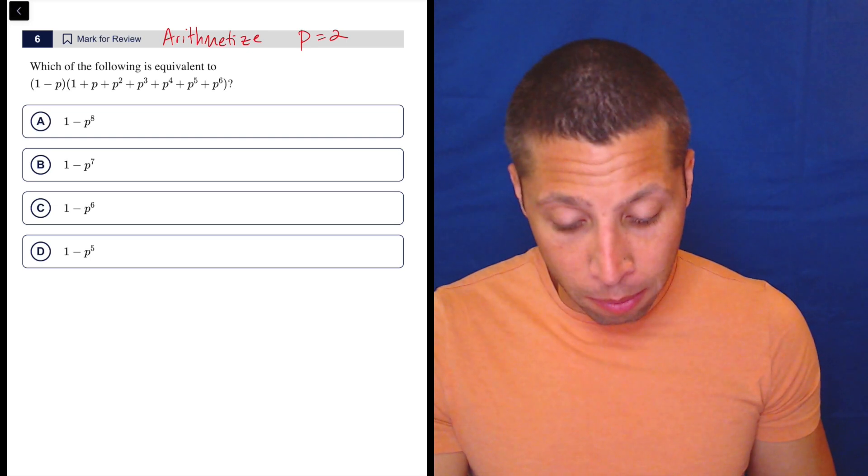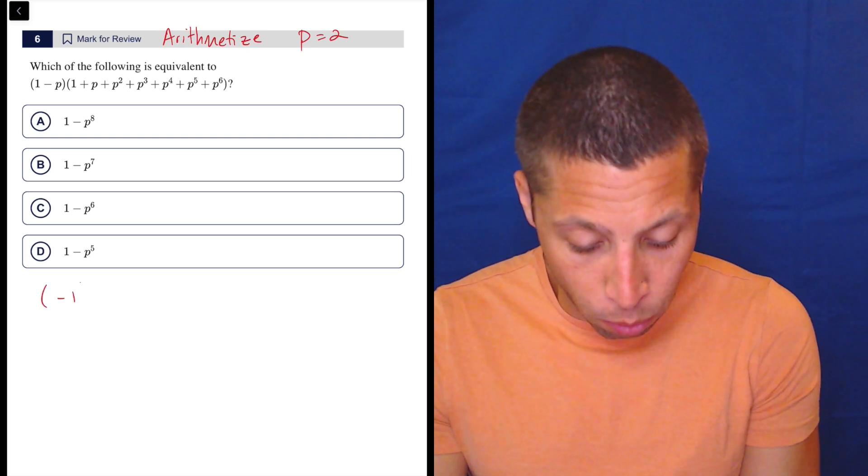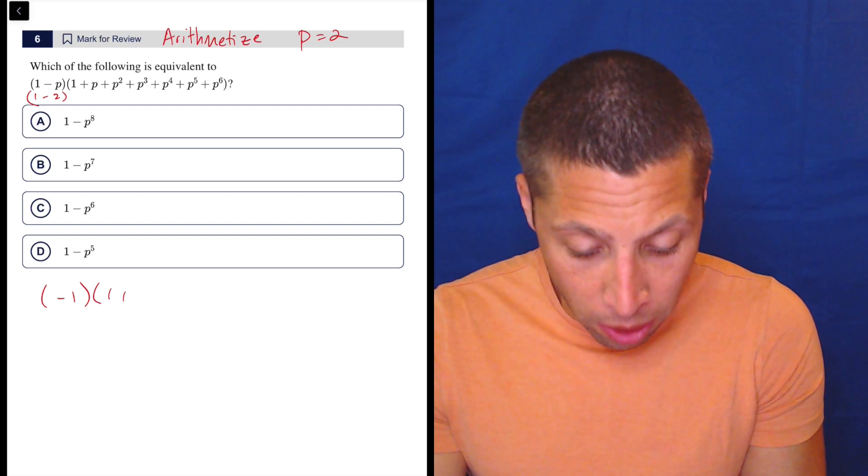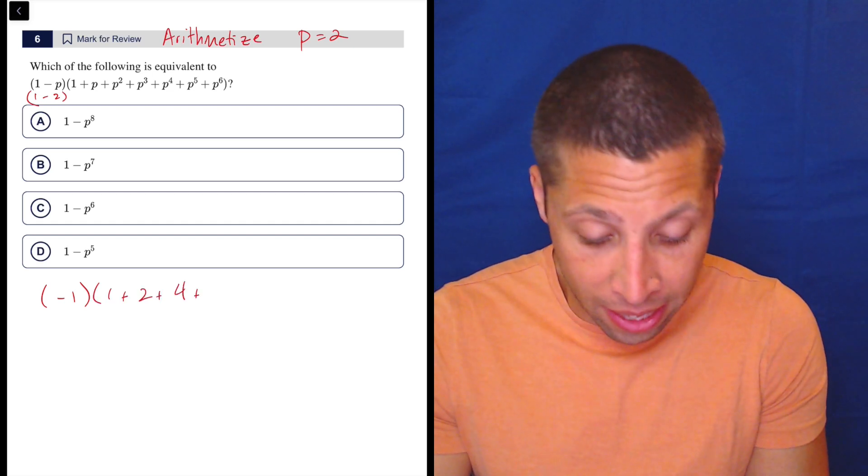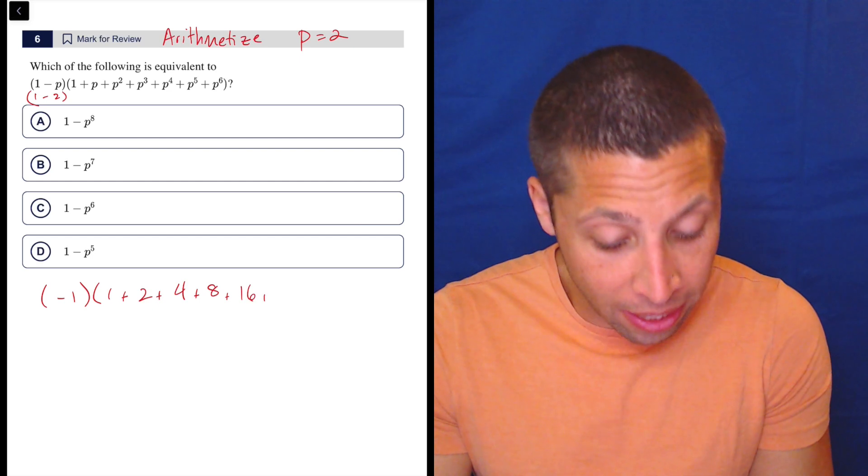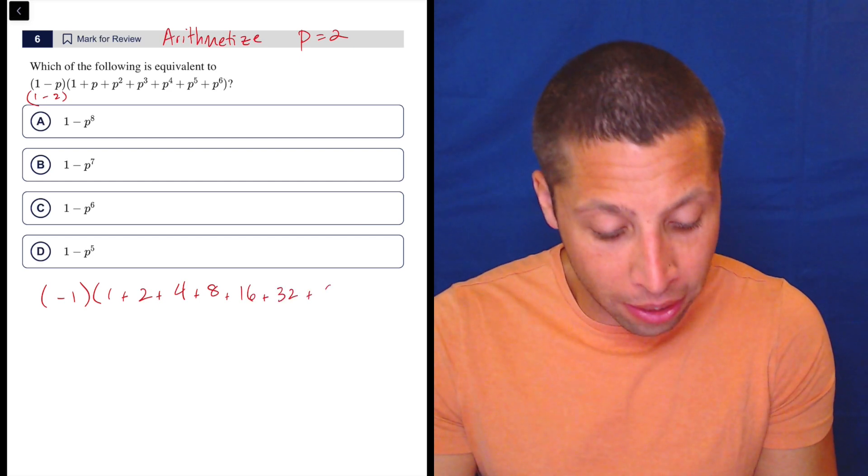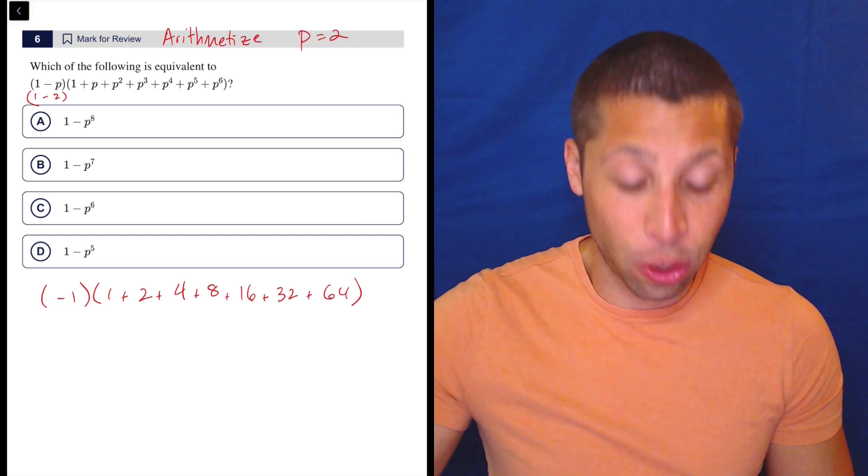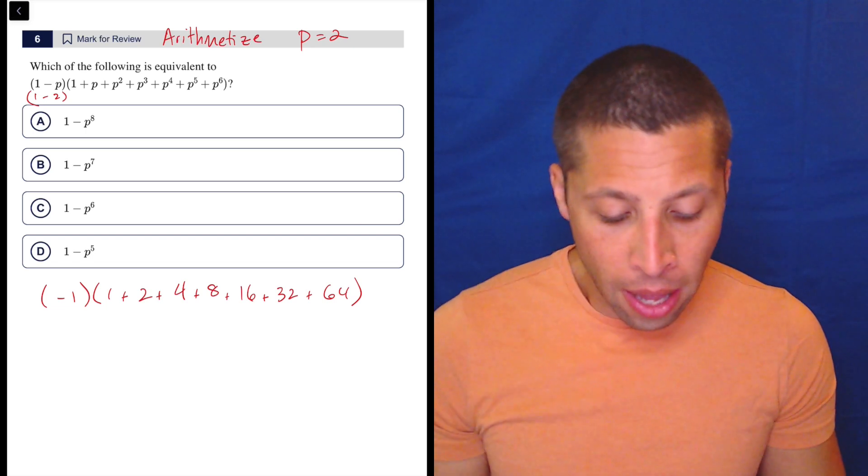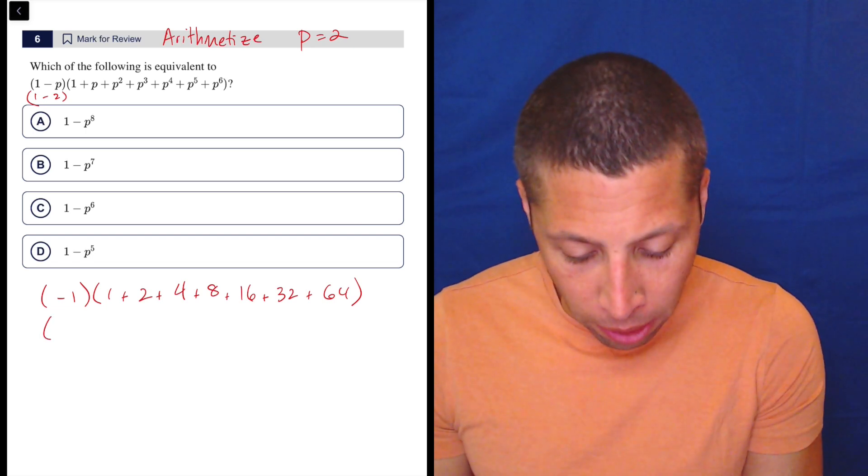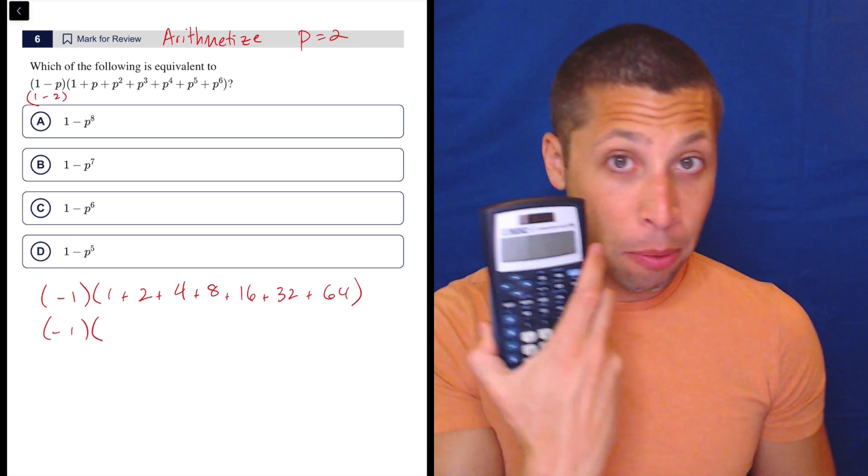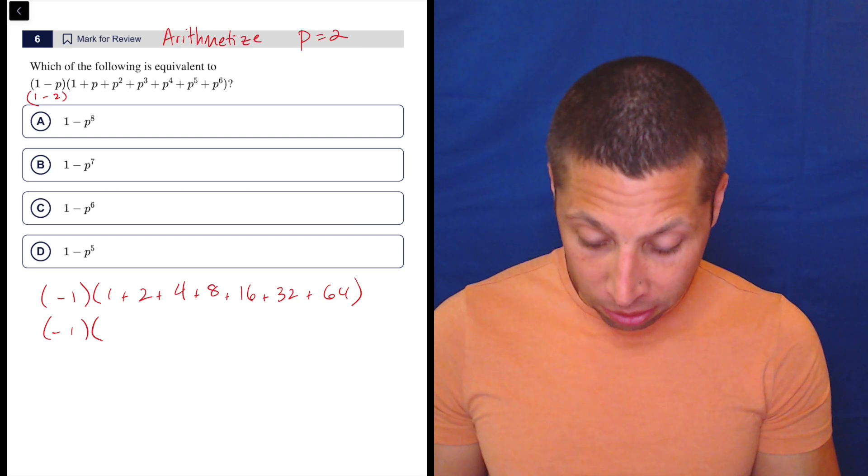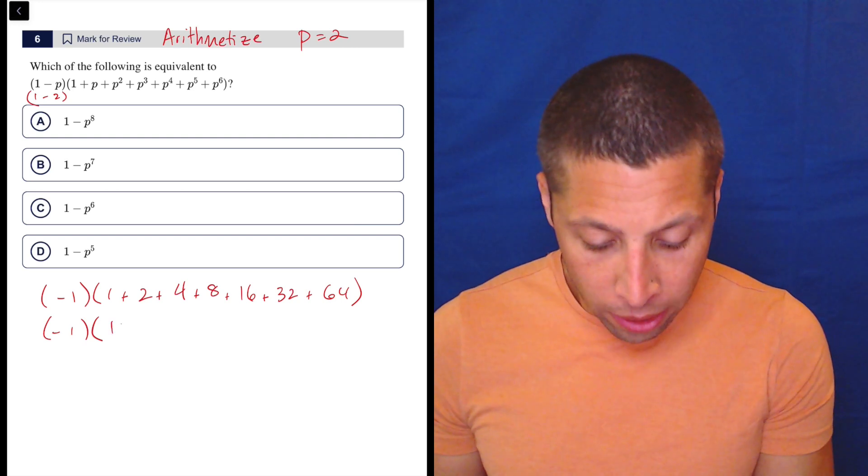So I can do that, and then this thing just becomes one minus two, so negative one. And then one plus two plus four plus eight plus sixteen plus thirty-two plus sixty-four. And at any point, if you don't understand the pattern of how multiplying by two again and again is going to work, you can just go to the calculator and do two to the sixth. But at this point, now I have negative one times, I would go to the calculator for this part.